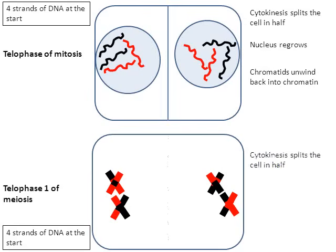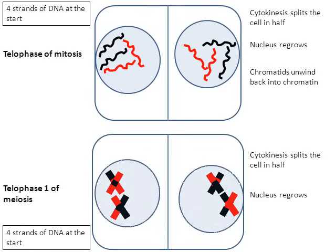But looking at the bottom cell, it's not finished. In telophase number one of meiosis, cytokinesis split the two cells in half. The nucleus regrows — though sometimes the nucleus does not regrow, in this animation we're showing what happens when it does. The chromosomes are not going to unwind into chromatin. So that's telophase number one of meiosis, but we're not quite done because there's a round two of all this for meiosis.